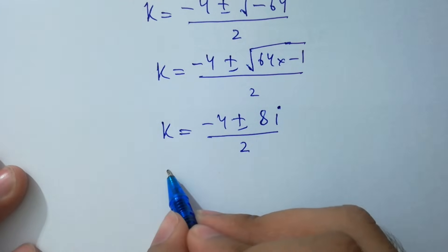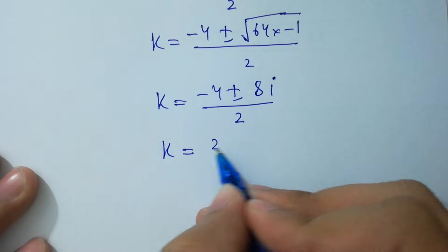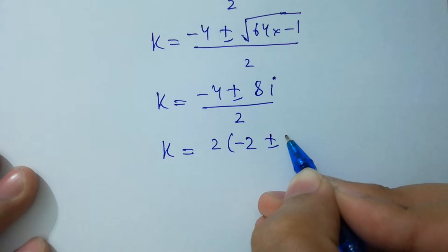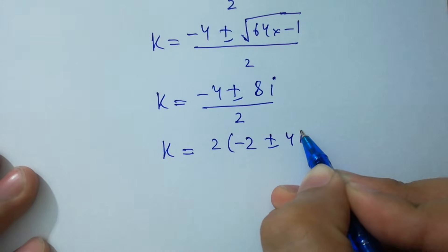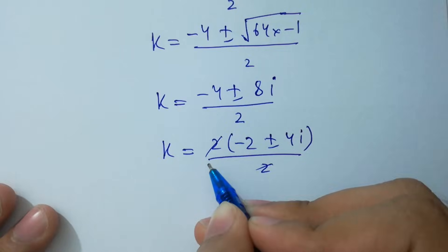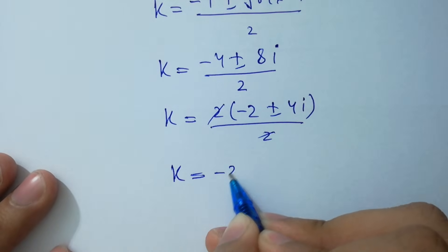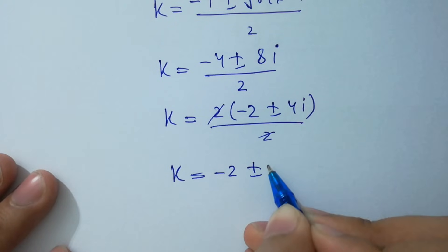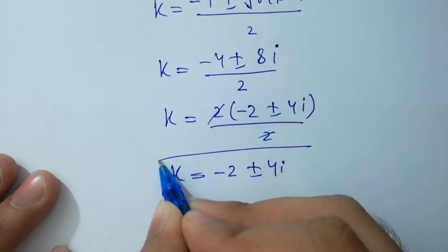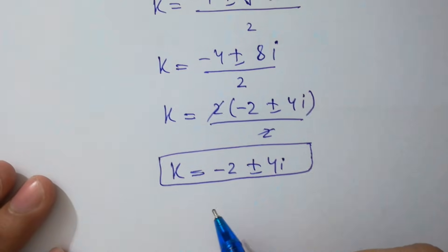2 will be common in the numerator. So k equals (2 times minus 2 plus or minus 2 times 4i) over 2. Cancelling the 2s, we get k equals minus 2 plus or minus 4i, which is our complex solution.